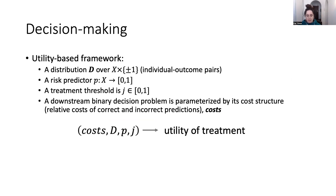We instantiate this in a utility-based framework. We suppose we have a distribution D over individual and binary outcome pairs, and we have this risk predictor P. A treatment threshold is a number J in the interval 0-1, where if a person's predicted risk is above the threshold they receive a prediction of 1. A downstream binary decision is parametrized by its cost structure — the relative costs of making correct versus incorrect predictions: false positives, true positives, etc. Together, this quadruple of costs, the distribution, the predictor, and the threshold determines some notion of utility from treatment.